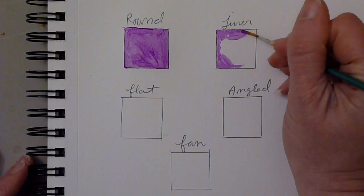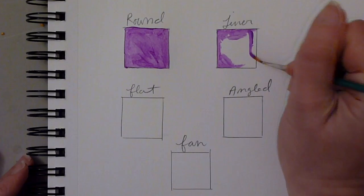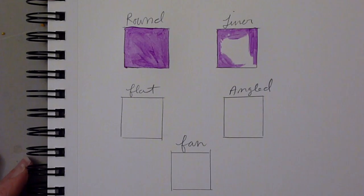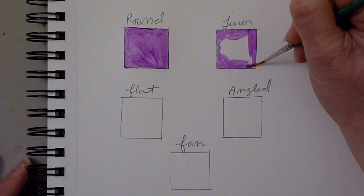A liner is a long skinny brush. Sometimes long skinny brushes might also be called riggers. They are really good for making long skinny lines. You can practice to do lettering with a long skinny brush like this. Detail work, fine detail work can be done with a liner.